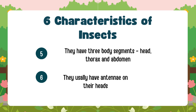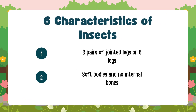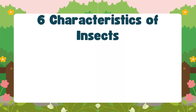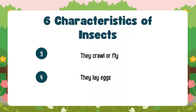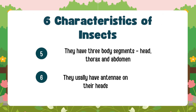So what are the six characteristics of insects? Three pairs of jointed legs, soft bodies with no internal bones, they crawl or fly, they lay eggs, they have three body segments — the head, thorax, and abdomen — and usually have an antenna on their head.